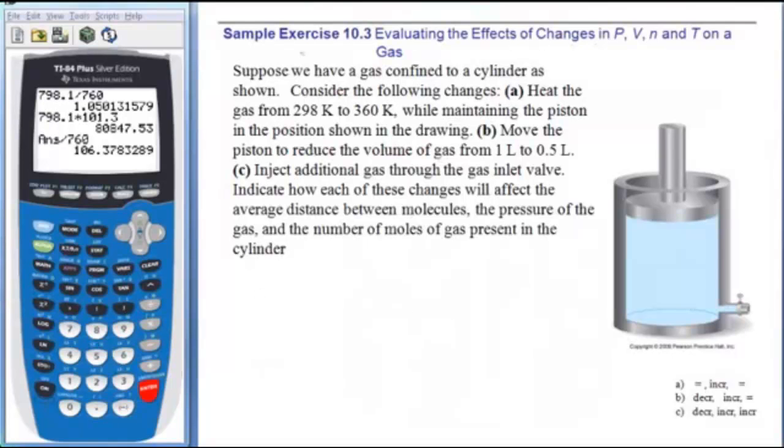All right, so let's take a look at a couple of examples. Suppose we have a gas confined to a cylinder as shown. Consider the following changes: Heat the gas from 298 to 360 K in both cases while maintaining the position shown in the diagram.